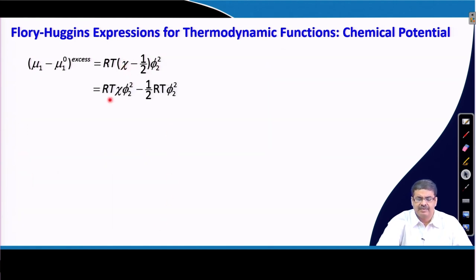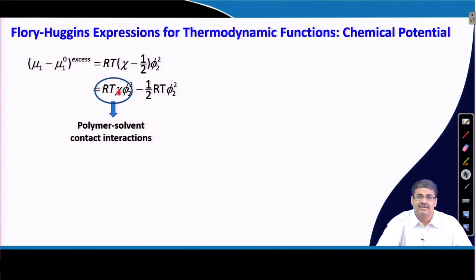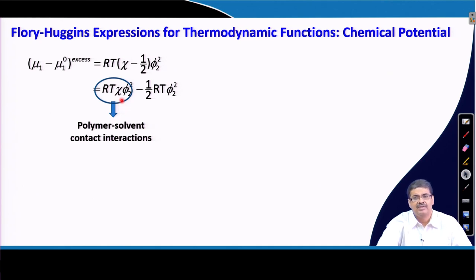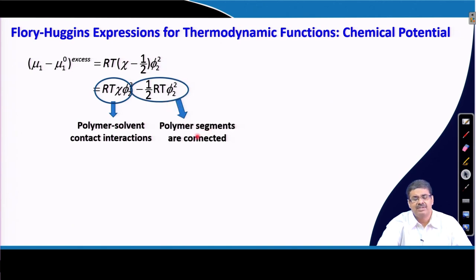Expanding this expression: the first term arises from polymer-solvent contact interactions. In an ideal solution, the enthalpy change of interaction between polymer and solvent is zero, but in a real solution it is non-zero. Because the enthalpy change is not zero, it also includes polymer conformation effects, so there could be an entropy change as well due to polymer-solvent contact interaction. The second term arises because polymer segments are connected, so the molar volumes of polymers and solvents are not the same.